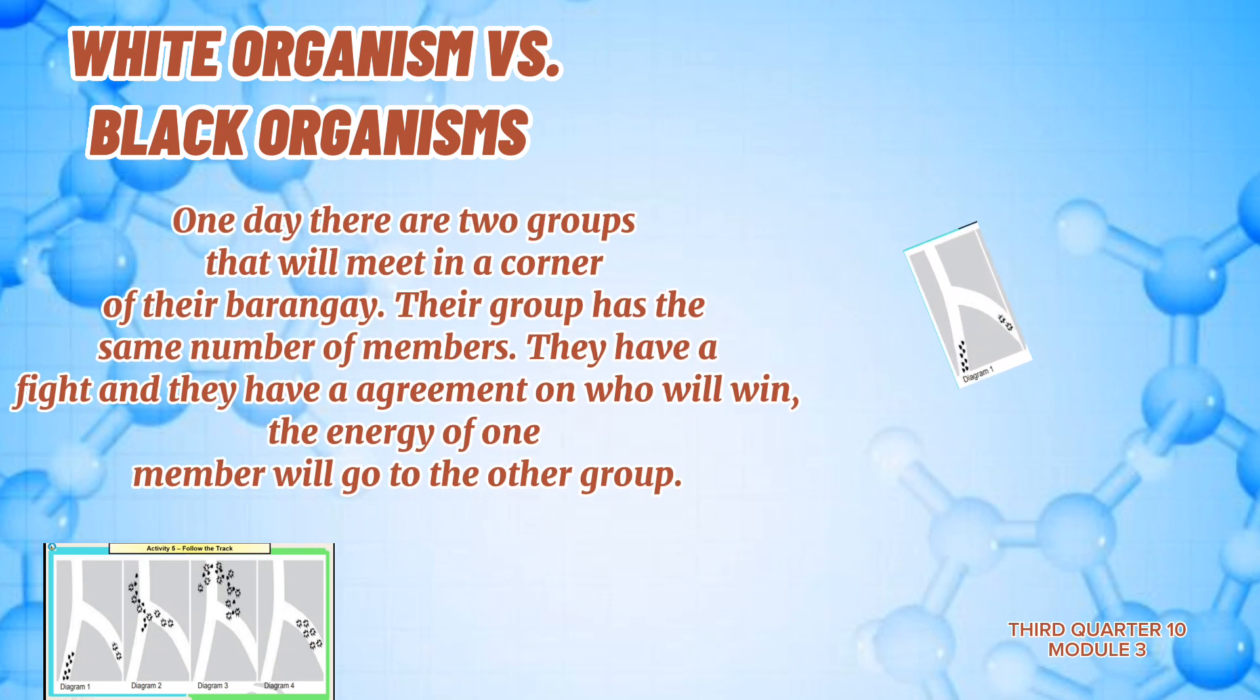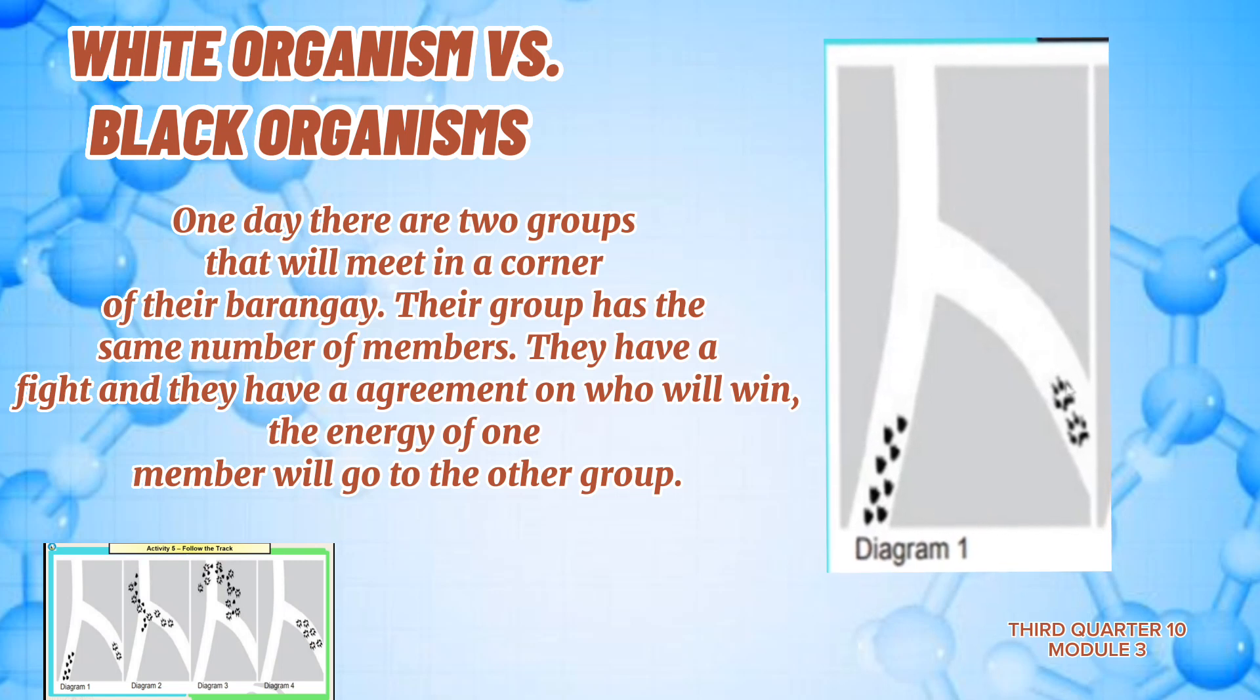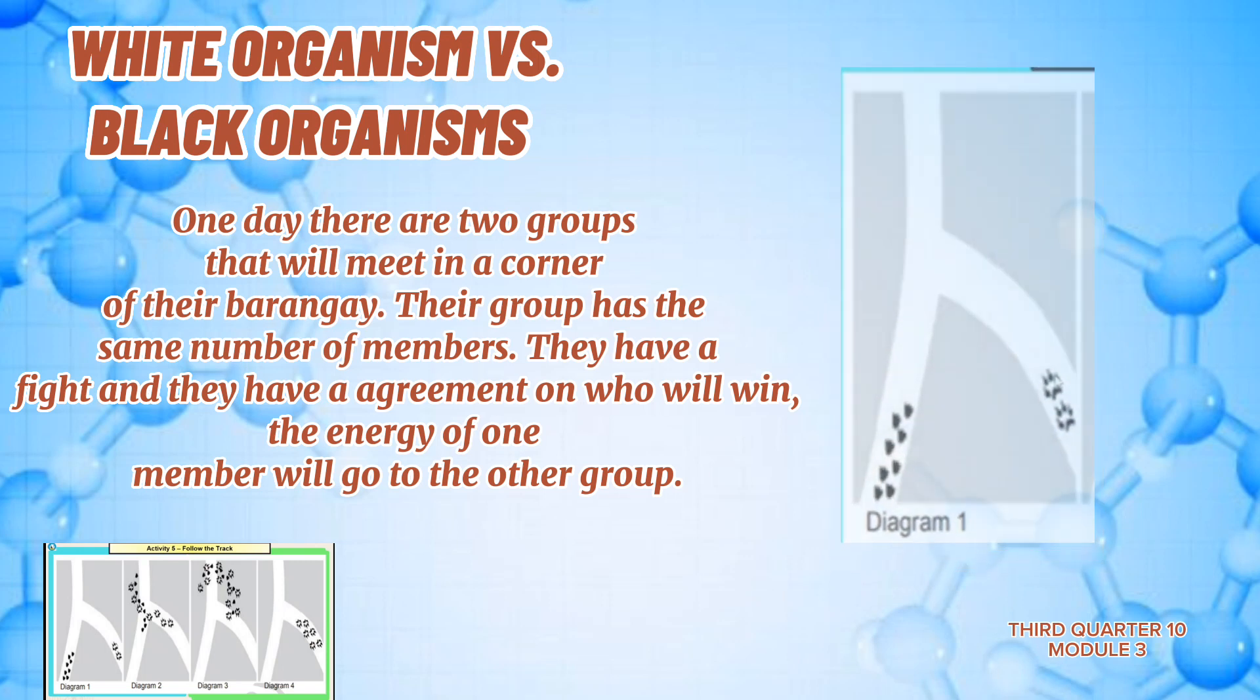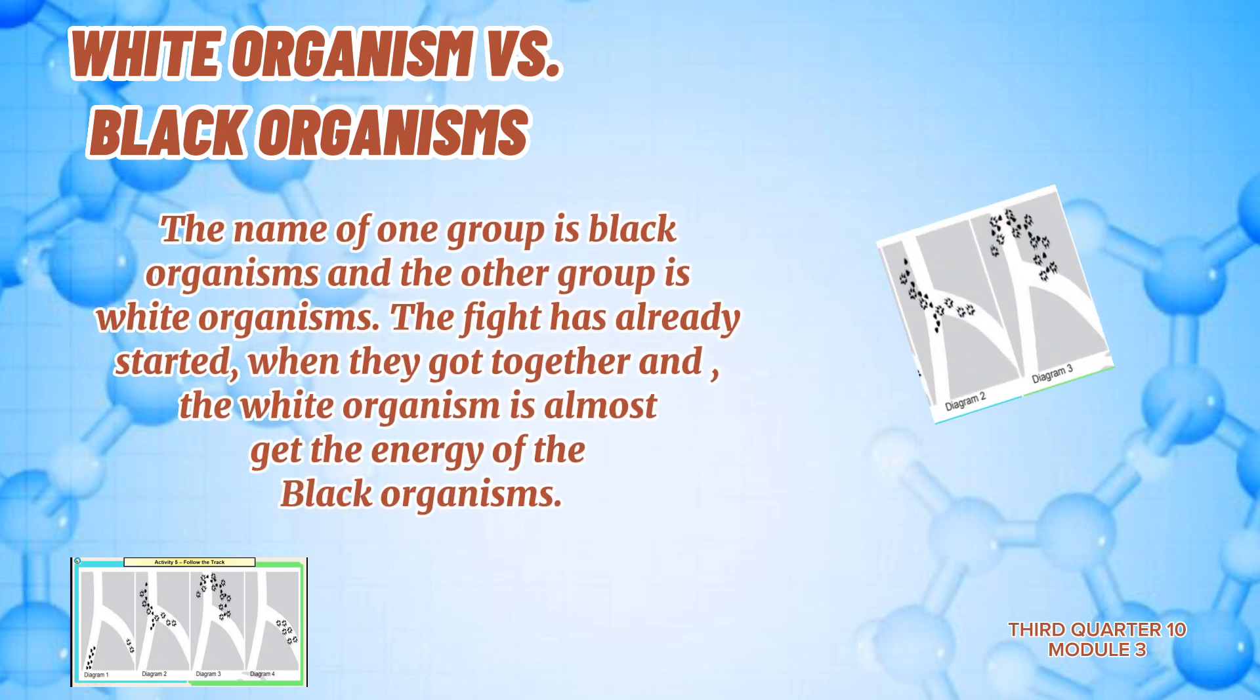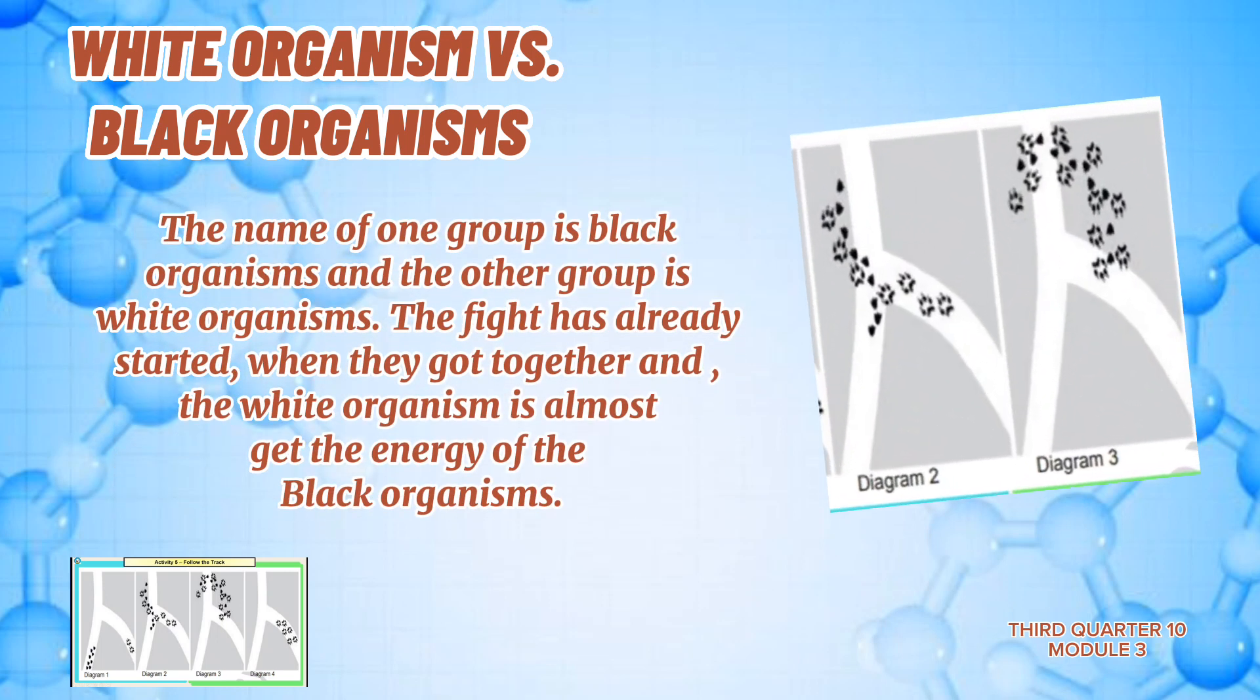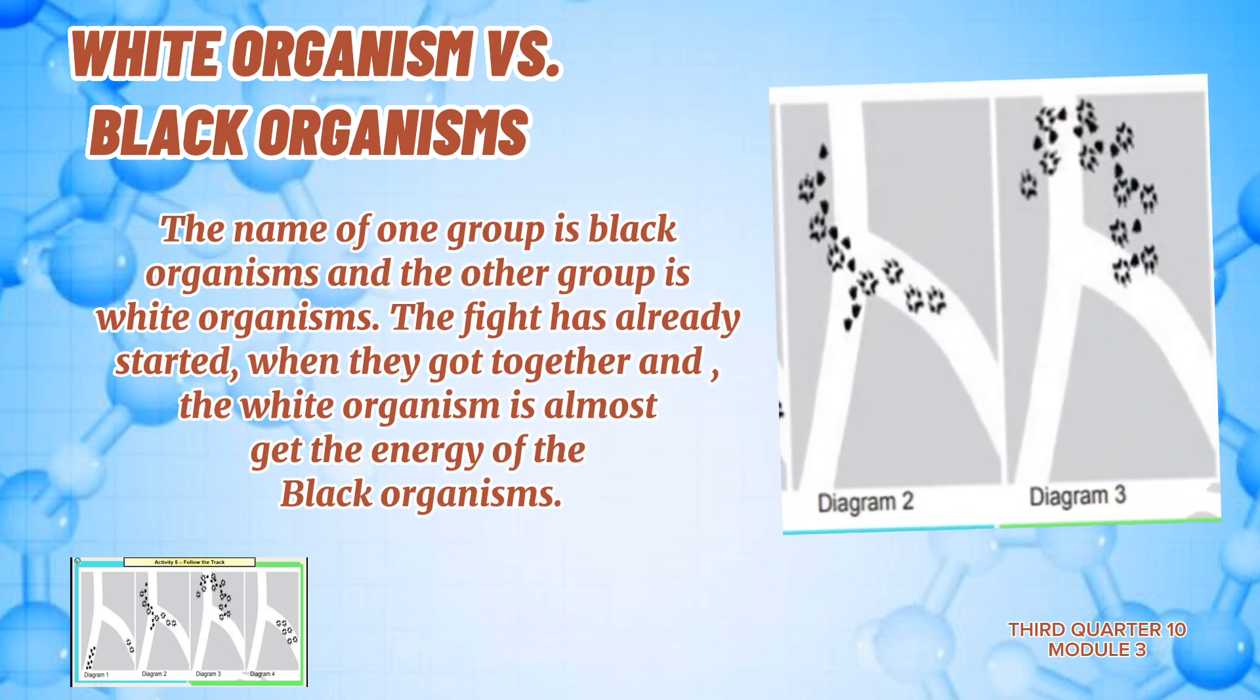White Organism versus Black Organism. One day, there are two groups that will meet in a corner of their barangay. Their group has the same number of members. They have a fight and they have an agreement on who will win. The energy of one member will go to the other group. The name of one group is Black Organism and the other group is White Organism.